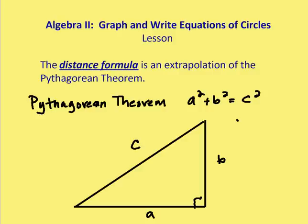So most people know that the Pythagorean theorem says that a squared plus b squared is equal to c squared, or the sum of the square of the two legs of a right triangle is equal to the square of the hypotenuse. Well, how does that apply to the distance formula?